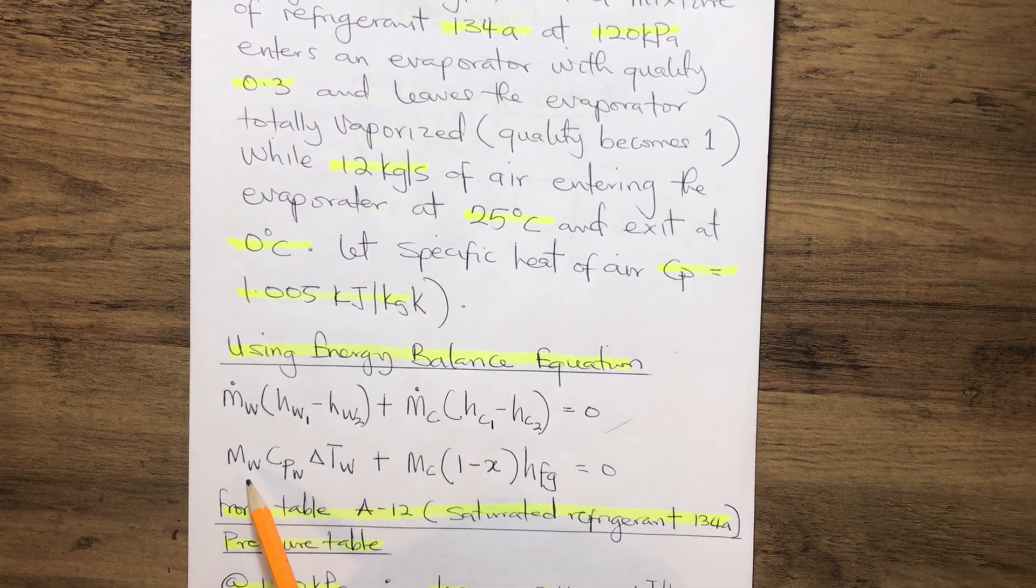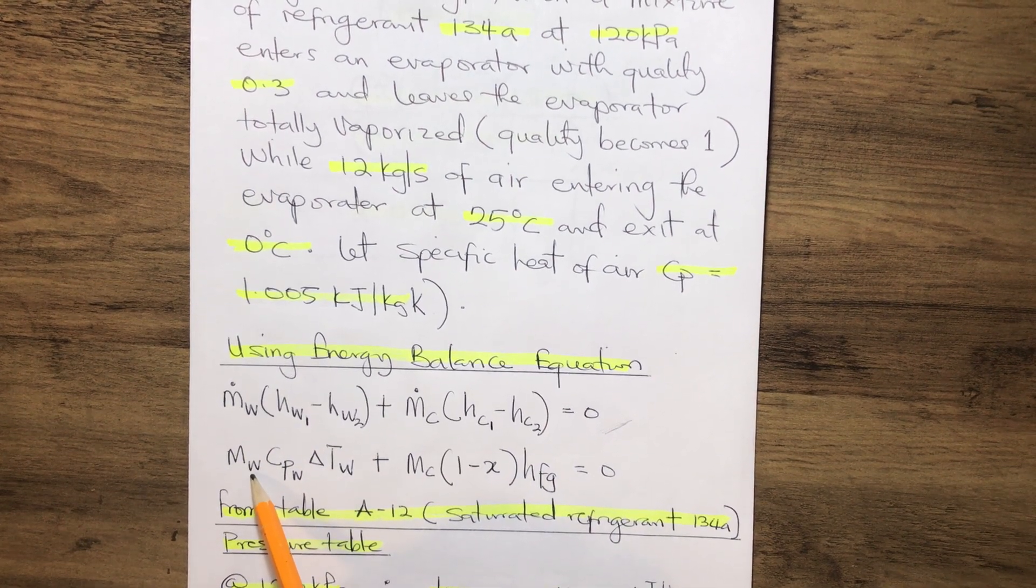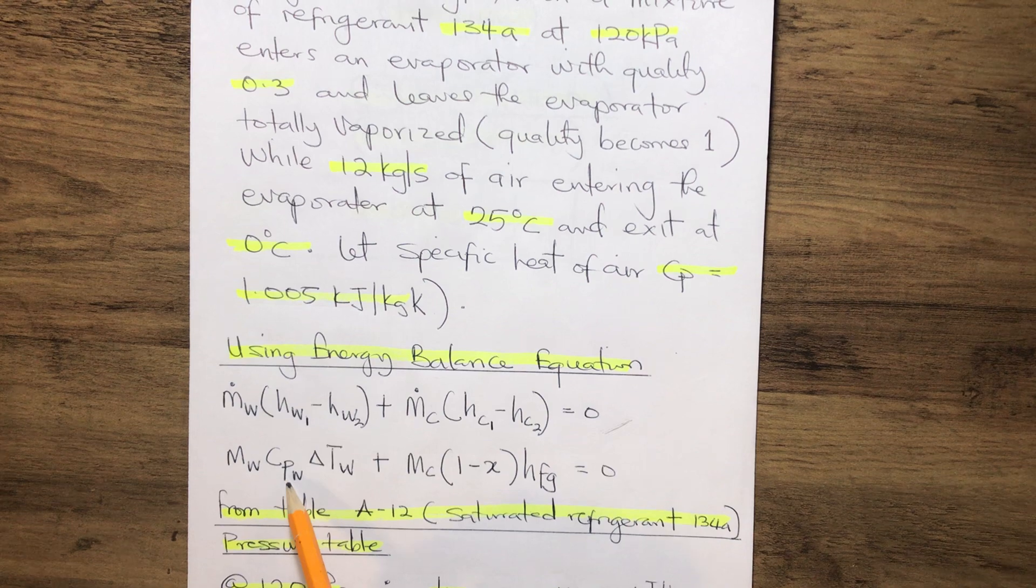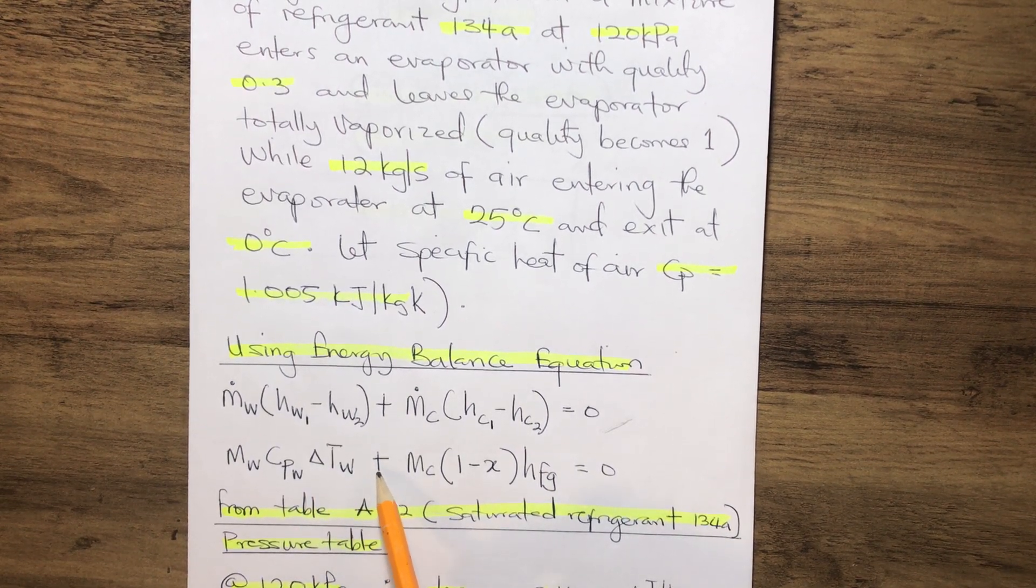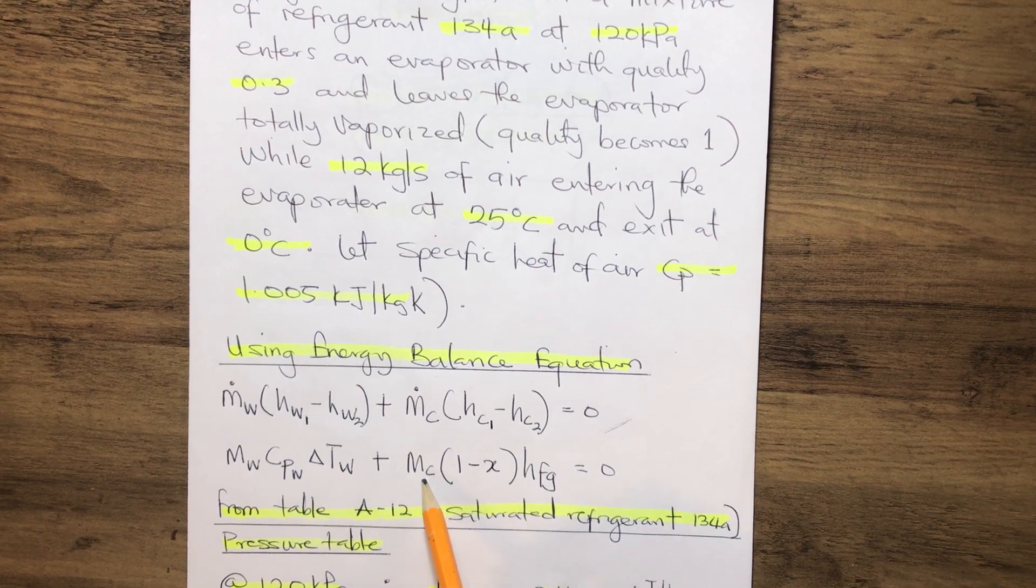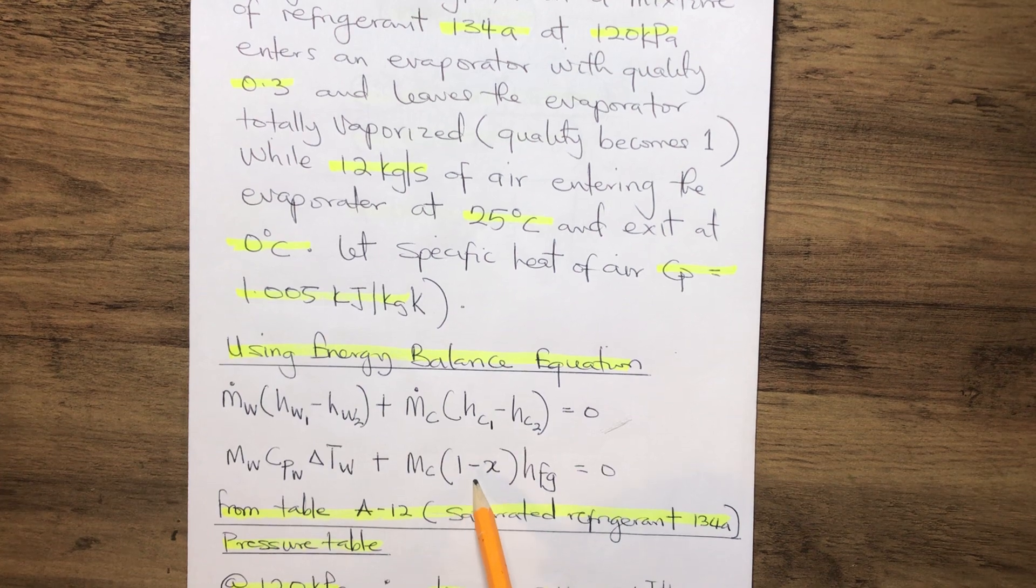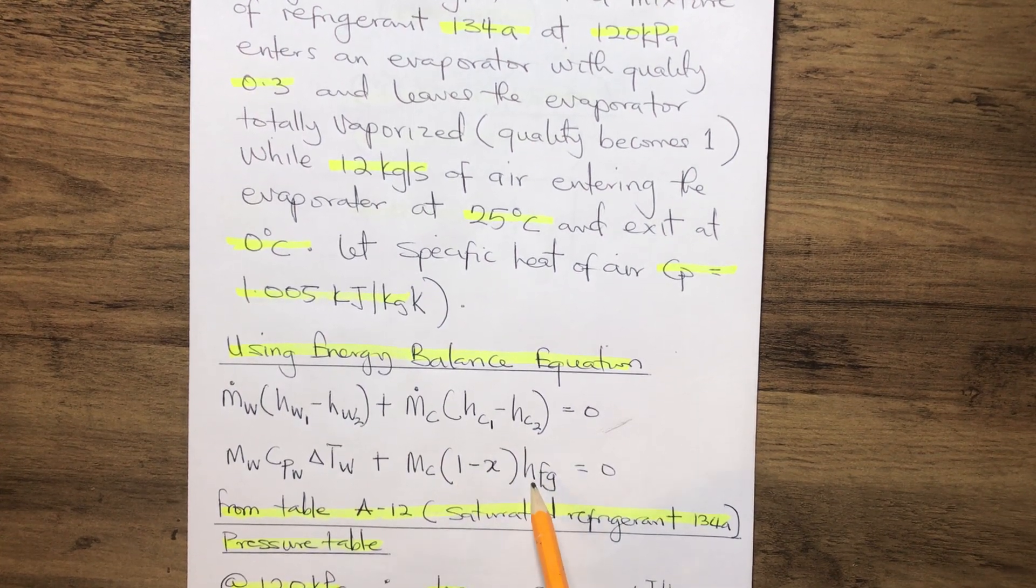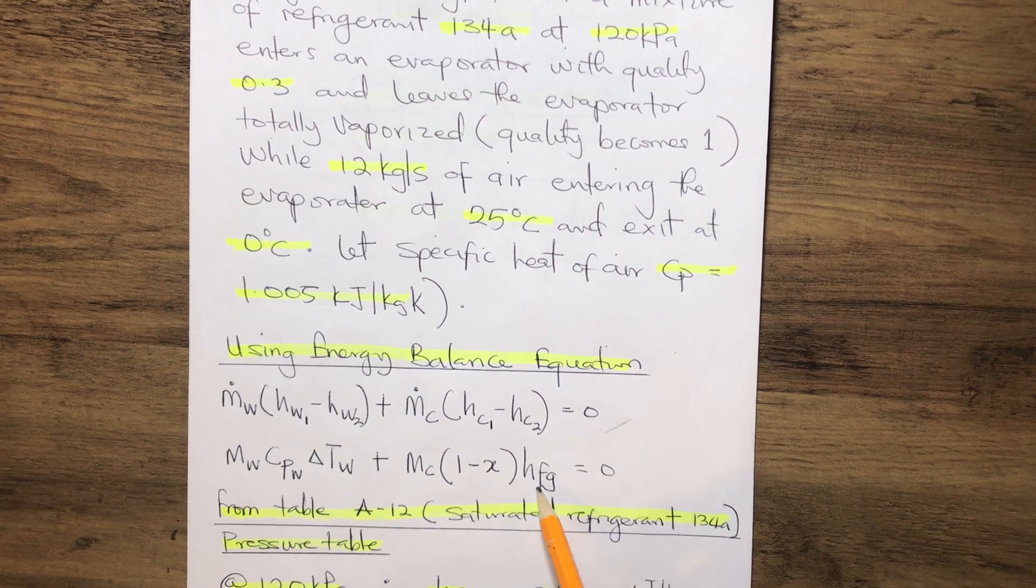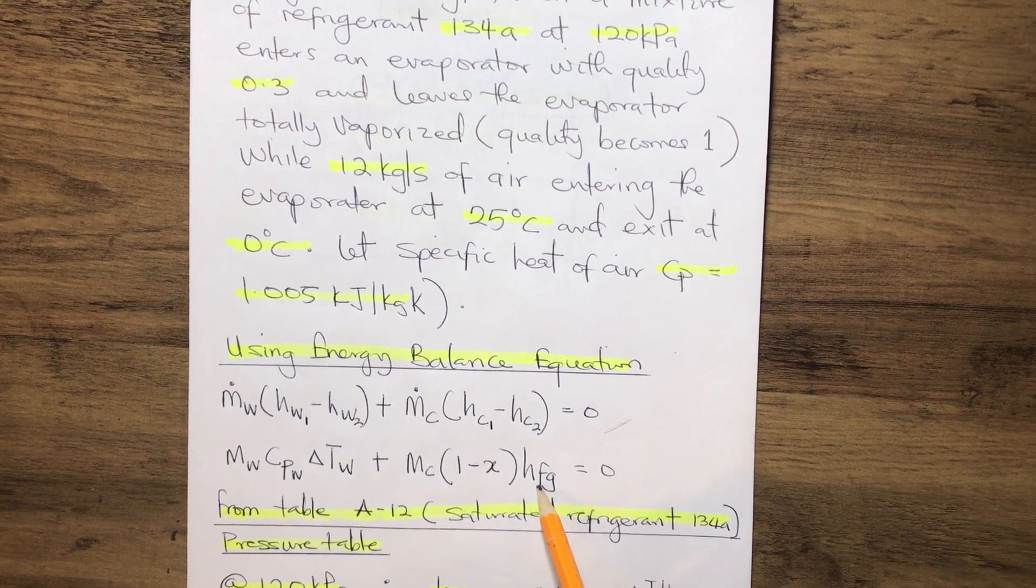Now, from there, we can deduce that the mass of the working fluid multiplied by the CPW multiplied by the variation of the temperature plus the mass of the cold fluid, which is the refrigerant, multiplied by the variation of its quality, which is 1 minus X, multiplied by HFG. This is the entropy of the cold fluid.